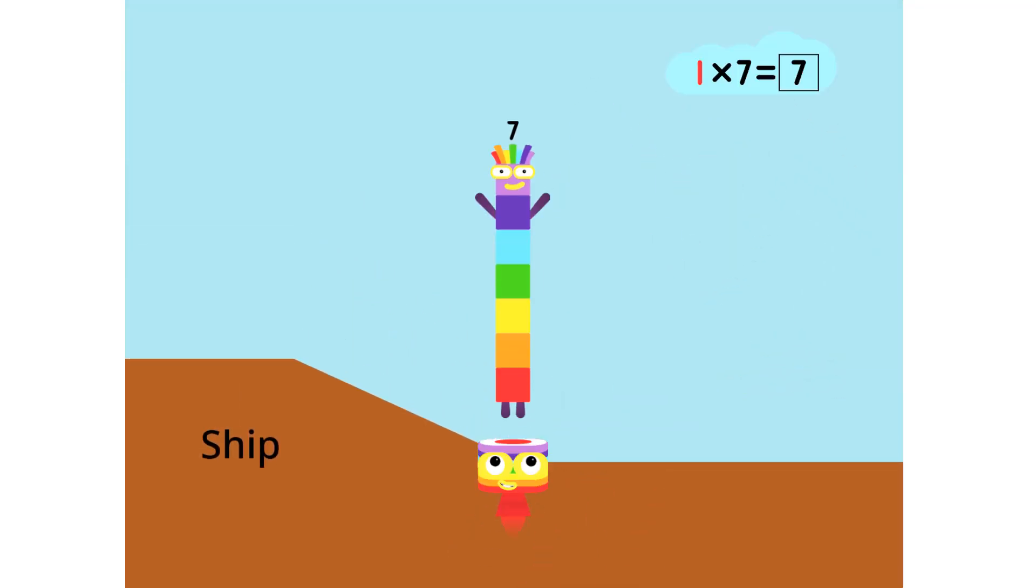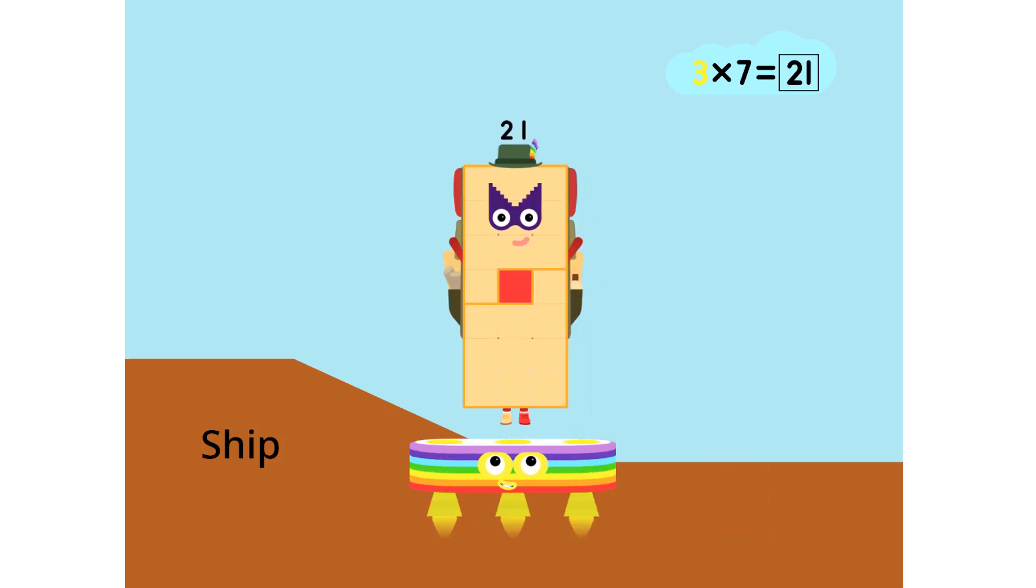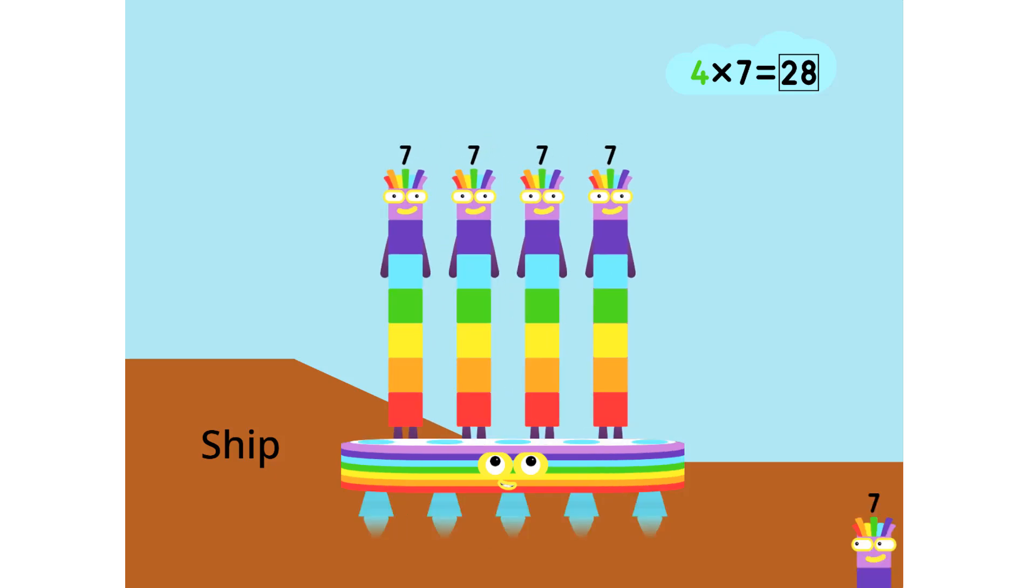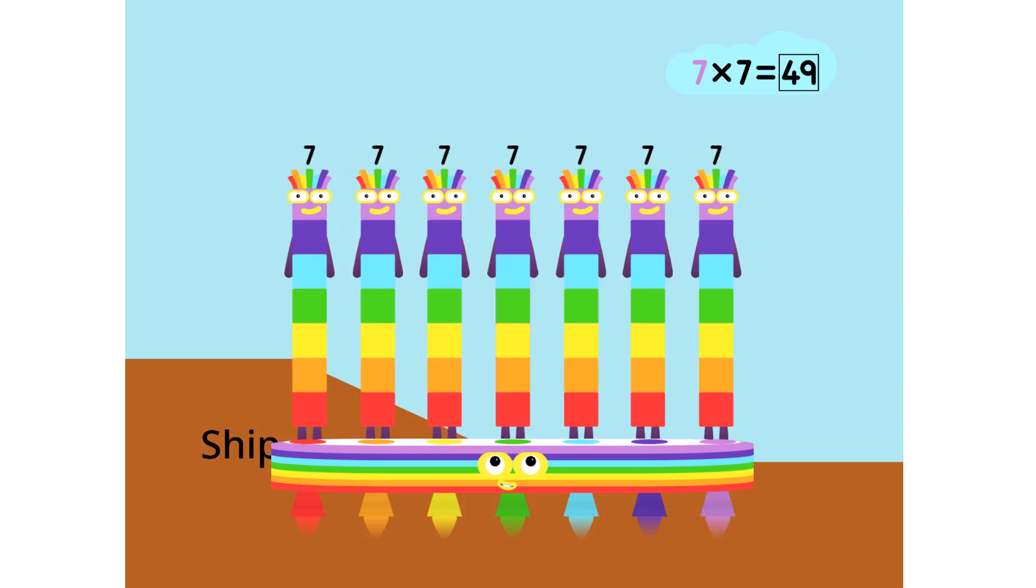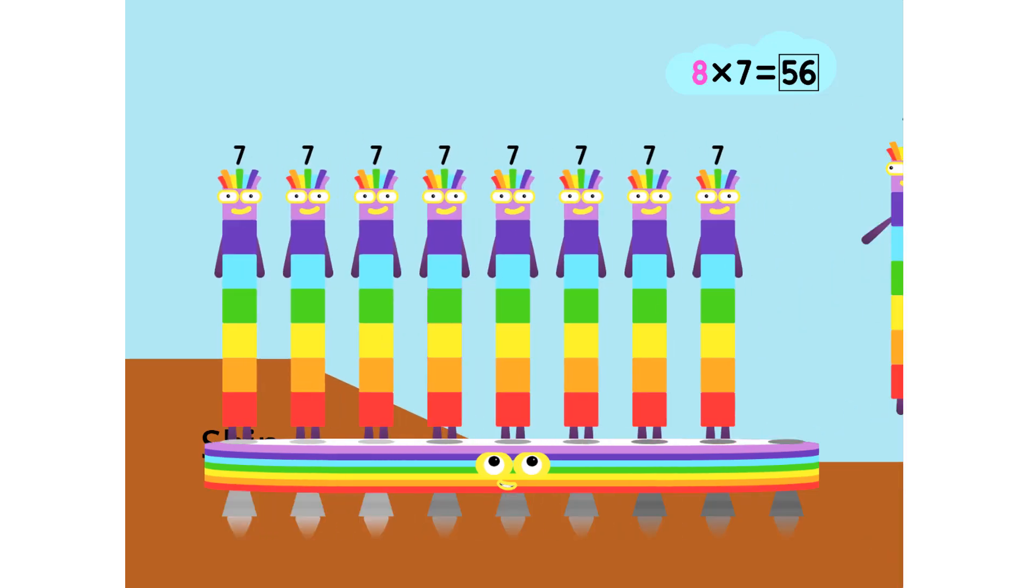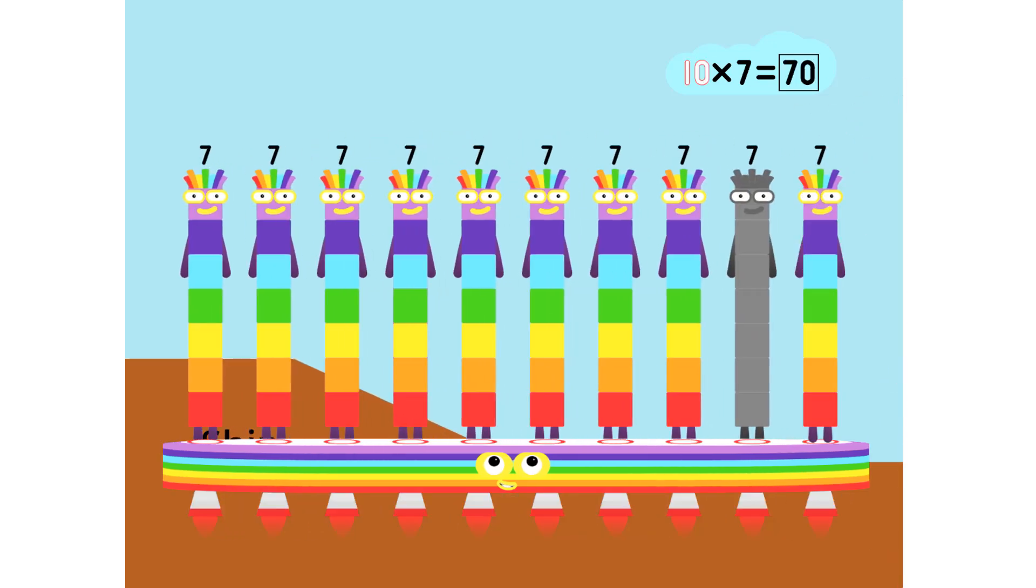1 times 7 is 7. 2 times 7 are 14. 3 times 7 are 21. 4 times 7 are 28. 5 times 7 are 35. 6 times 7 are 42. 7 times 7 are 49. 8 times 7 are 56. 9 times 7 are 63. 10 times 7 are 70.